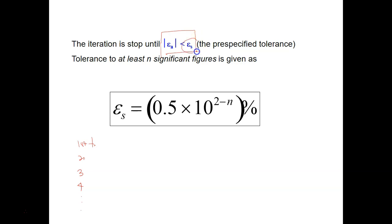So ES is what we call as the pre-specified tolerance. So EA is less than ES. So if you got your approximation error which is less than ES, you know that you can stop your calculation of your problem.